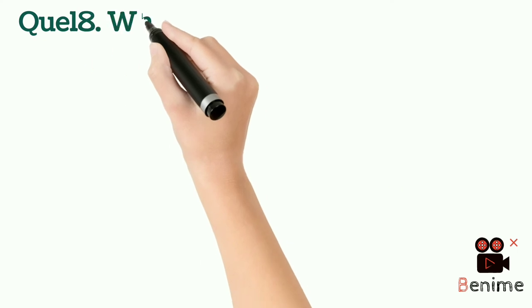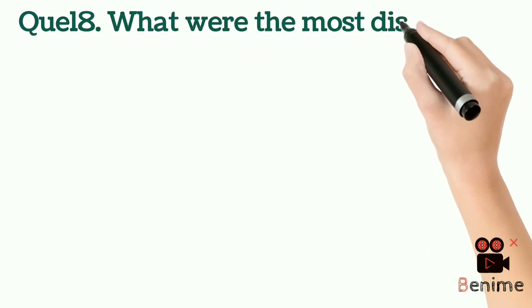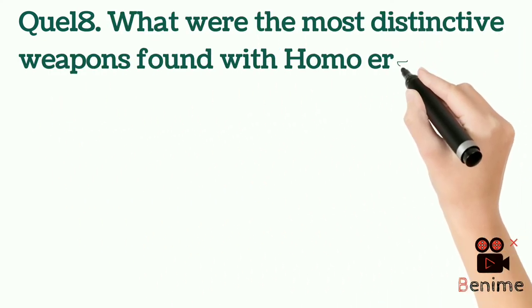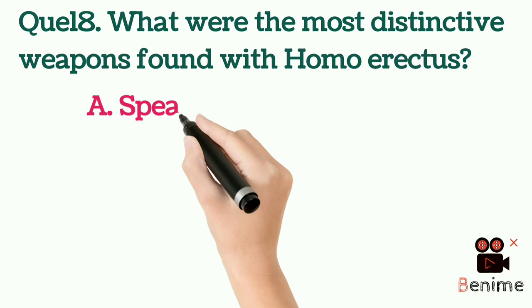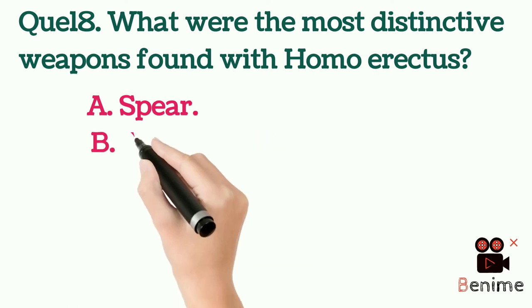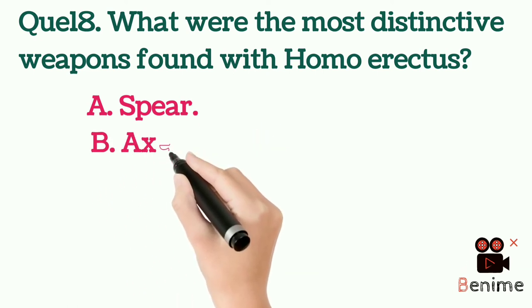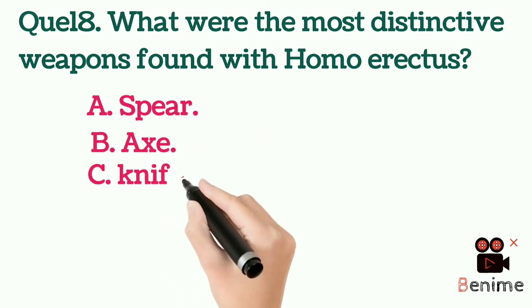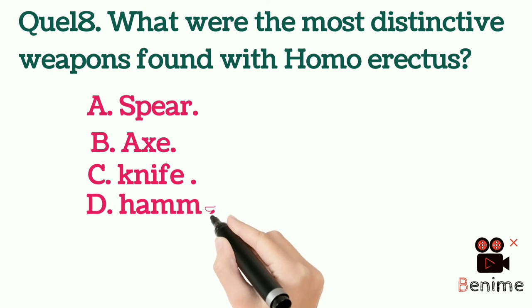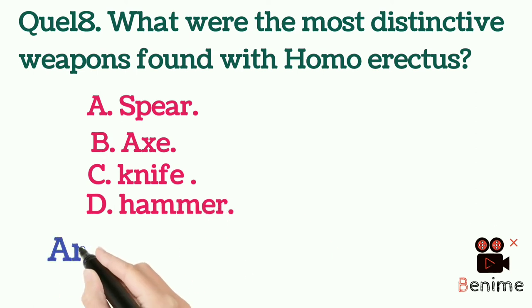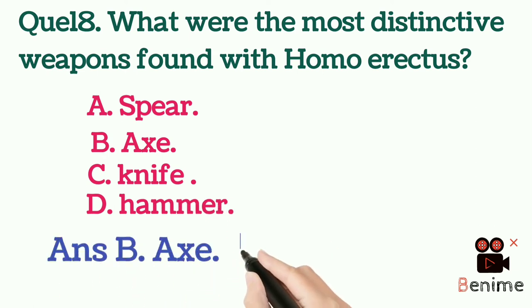Question 18: What were the most distinctive weapons found with Homo erectus? A. Spear. B. Axe. C. Knife. D. Hammer. Answer B: Axe.